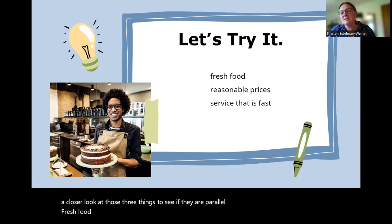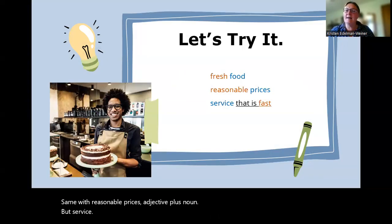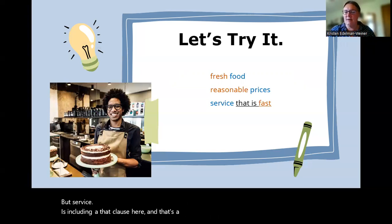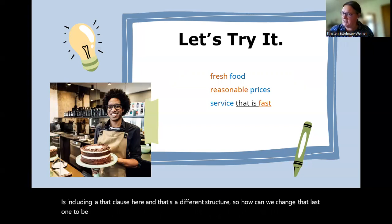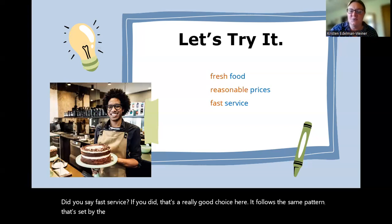Fresh food is an adjective plus the noun it's describing. Same with reasonable prices: adjective plus noun. But service is including a 'that' clause here, and that's a different structure. So how can we change that last one to be more like the first two? Did you say fast service? If you did, that's a really good choice here. It follows the same pattern that's set by the previous two items.